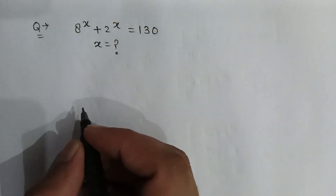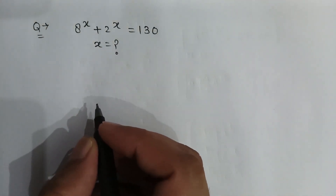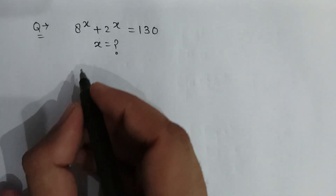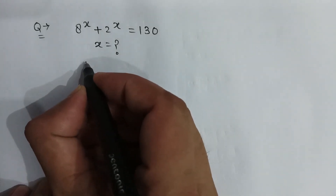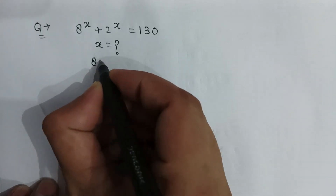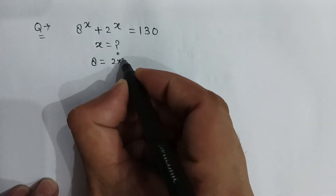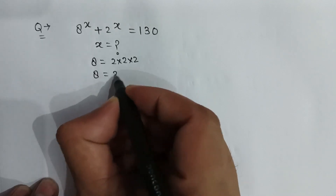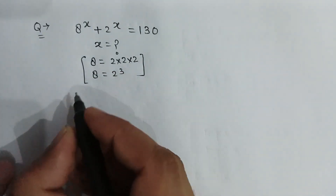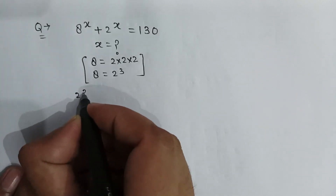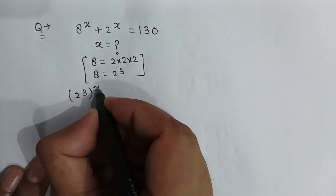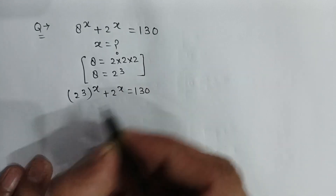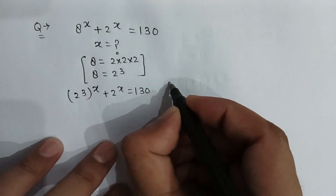The question is: 8 to the power x plus 2 to the power x is equal to 130, and we have to find the value of x. We can write 8 as 2 multiplied by 2 multiplied by 2, that is 8 equals 2 to the power 3. So we rewrite it as: 2 to the power 3, whole power x, plus 2 to the power x, is equal to 130.